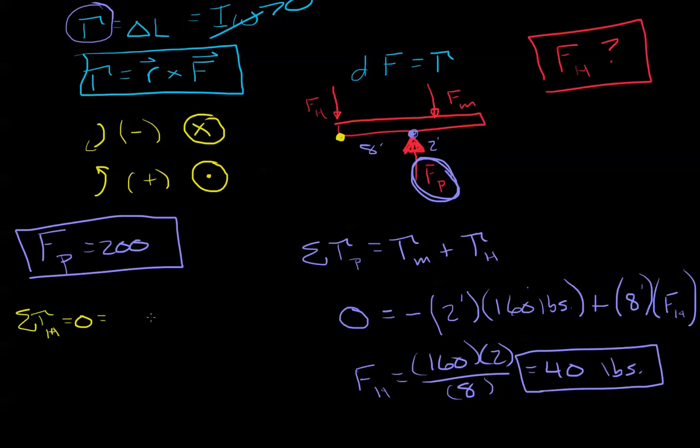Now if I do it that way, the sum of the torques about h equals zero, and I once again, it's negative. So it's going to be negative 10 feet, now because I'm two feet from the center, 10 feet from her, times 160 pounds plus, now how far, let's look at the pivot. The pivot is eight feet away. We're going to take eight feet times the force of the pivot. We simply solve for the force of the pivot, and that's going to be 10 times 160 divided by 8. What do you know, 200 pounds.